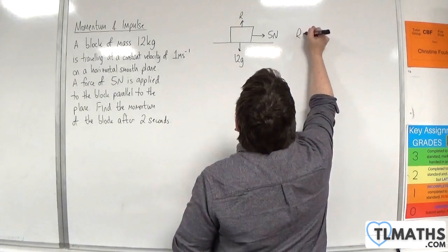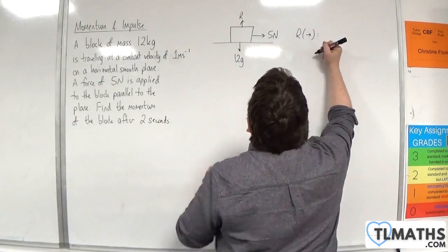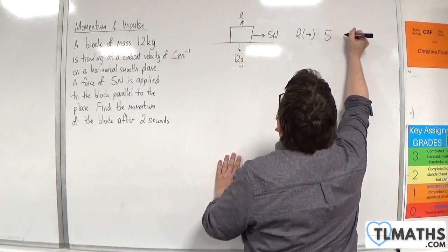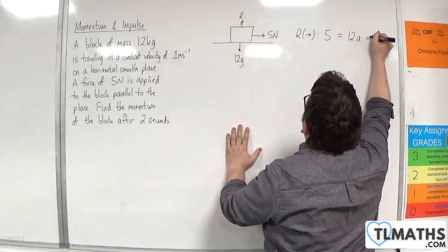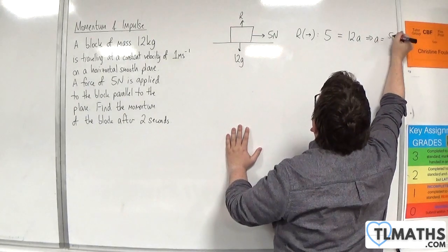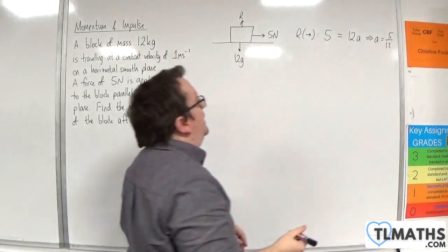We can resolve to the right, take it to the right as positive. 5 take away no resistance forces is equal to the mass 12 times the acceleration. So the acceleration is 5 twelfths meters per second per second.